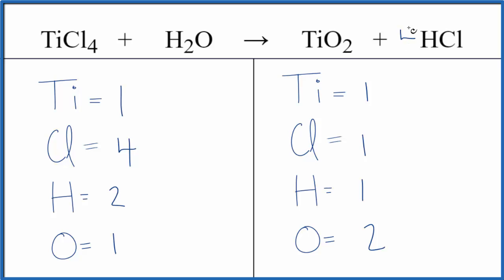Why don't we put a 4 in front of the HCl? 1 times 4, that's 4 hydrogens, but the 4, it goes to everything. So 1 times 4, that gives us 4 chlorine atoms. Those are balanced.